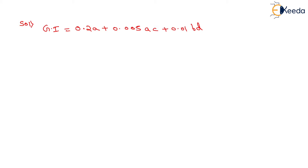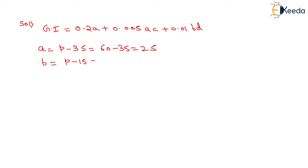Now we have to find the values of A, B, C, and D. A will be equals to P minus 35, that is 60 minus 35, which equals 25. Now we have to determine the value of B, which will be equals to P minus 15, that is 60 minus 15, which equals 45.